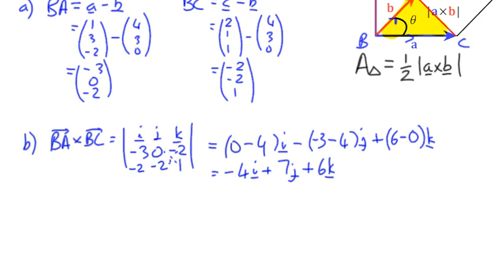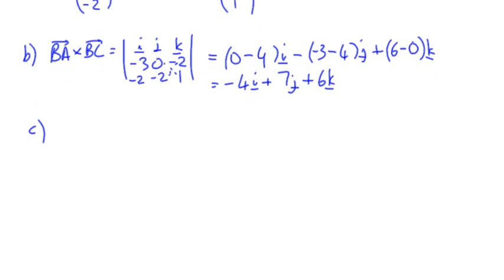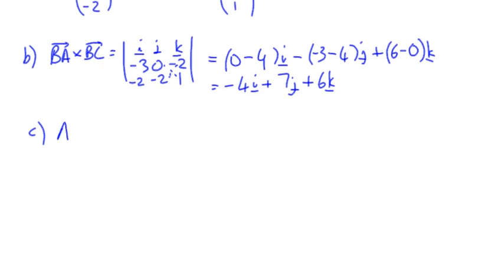And this time I want to find the area of the triangle. So we could say that the area of the triangle is equal to half times the magnitude of BA cross BC. So we're going to have to work out what the magnitude is, Pythagorean theorem again.